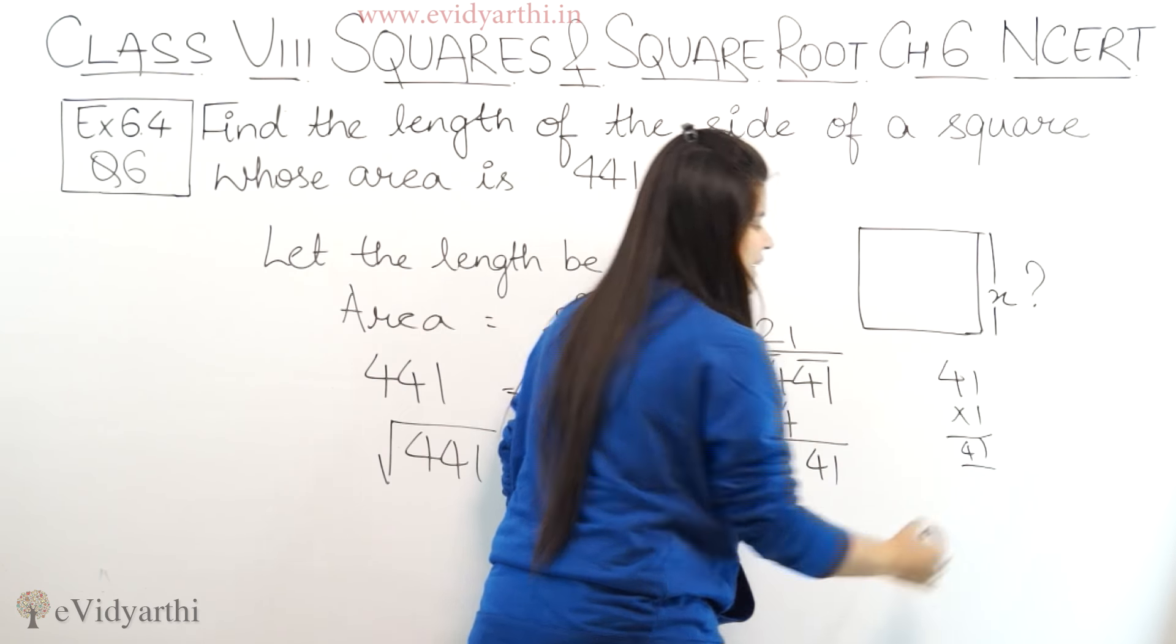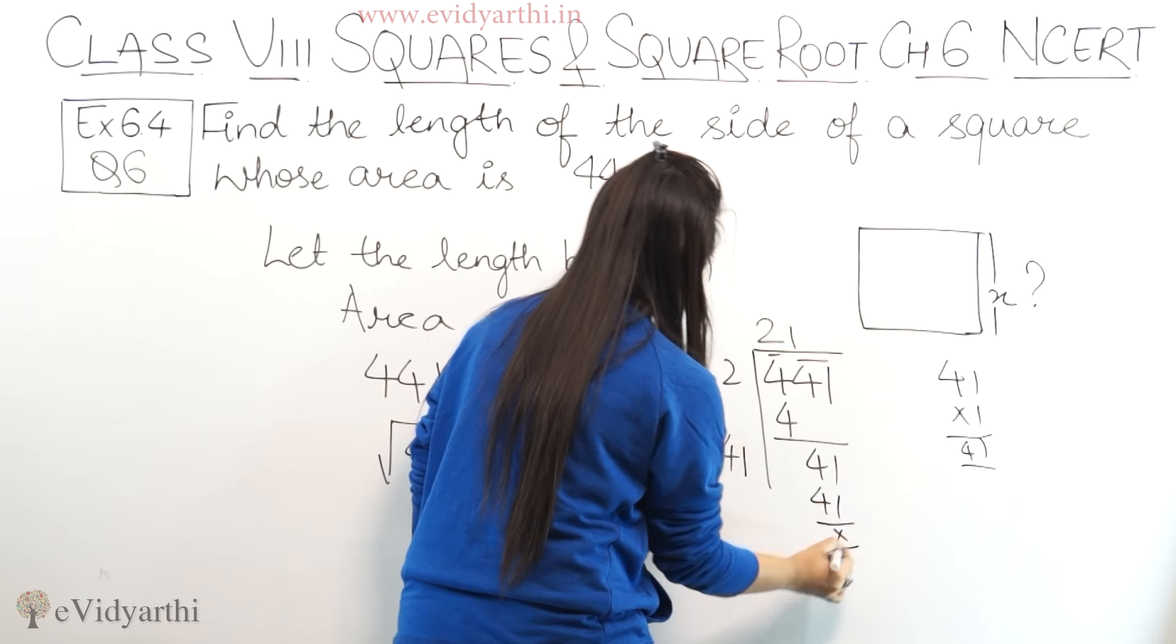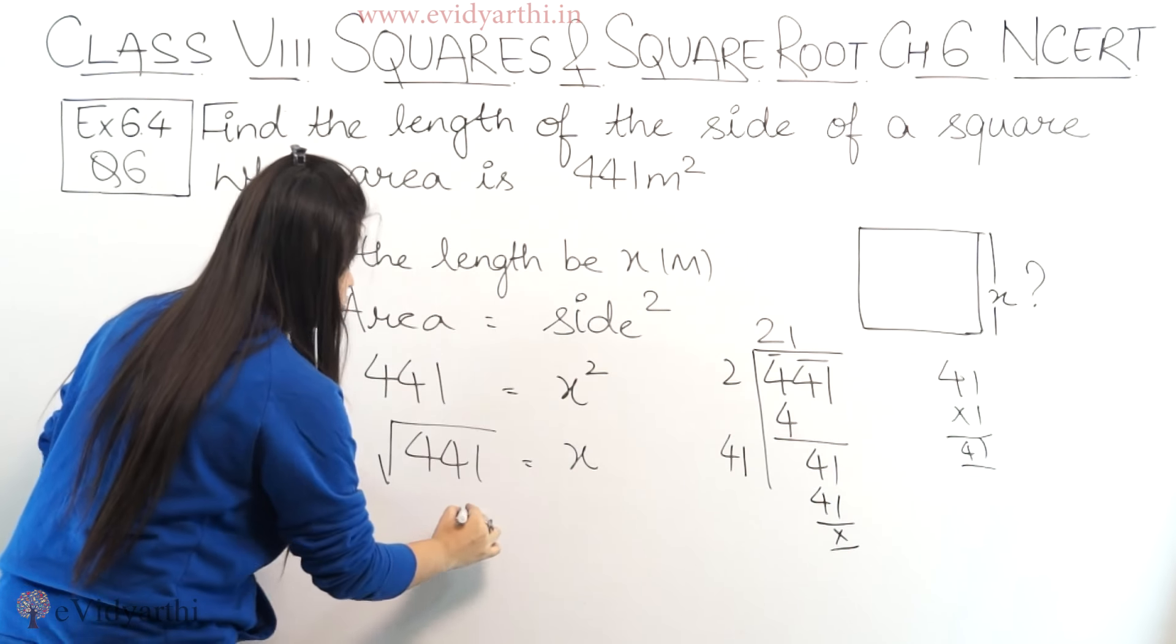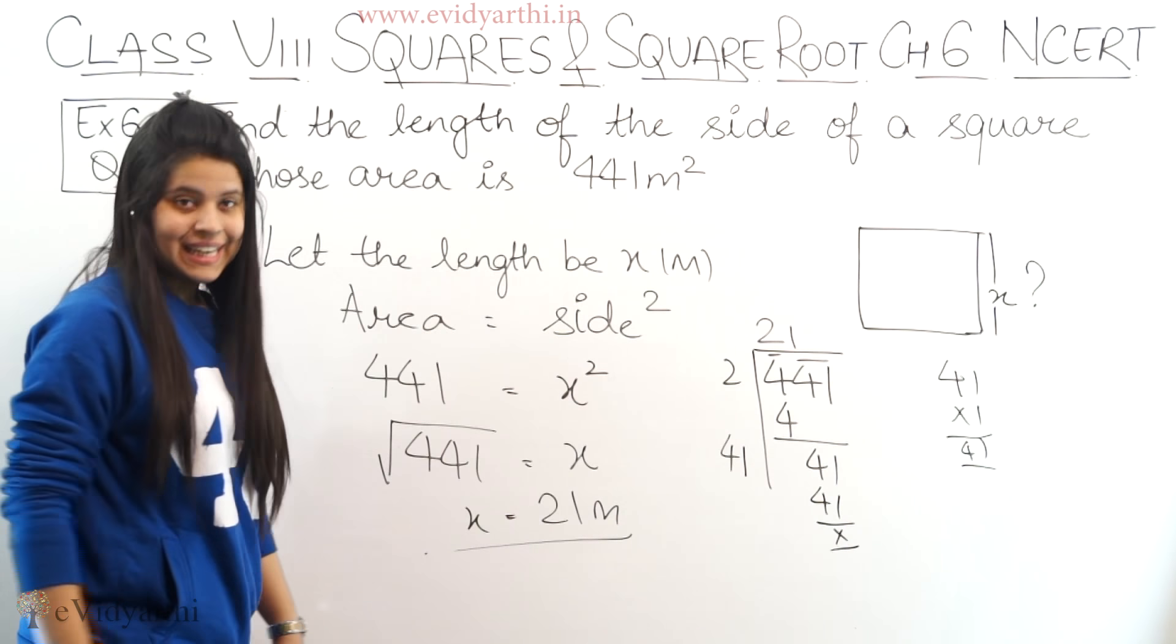1 into 1 will be 41. So this will be 41. So means x equals to we will get 21 meter. See?